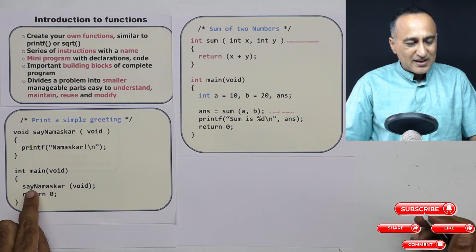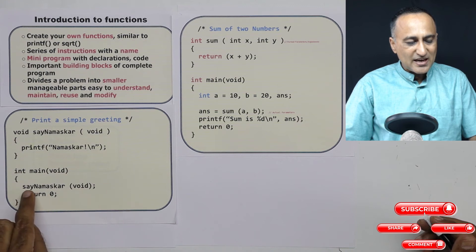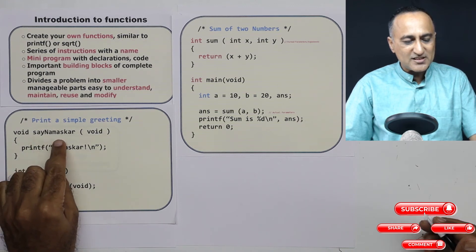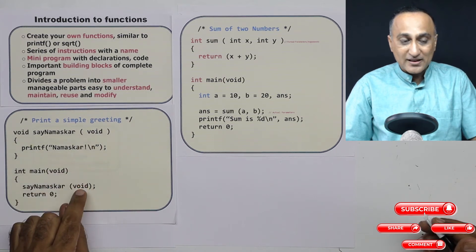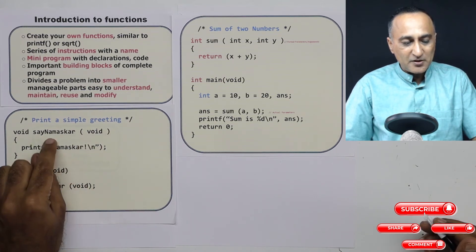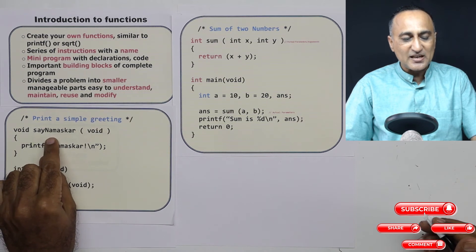Now when I say sayNamaskar void, what I am doing is I am invoking this particular function. SayNamaskar void indicates that nothing is being sent from main to this particular function sayNamaskar.